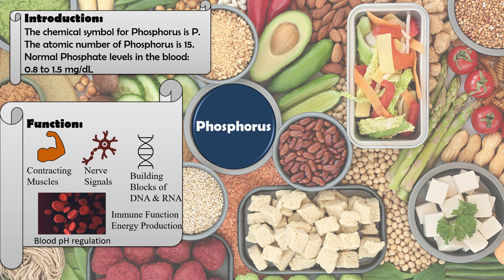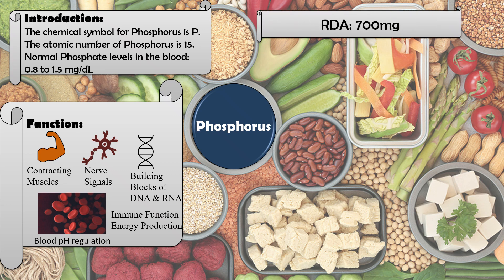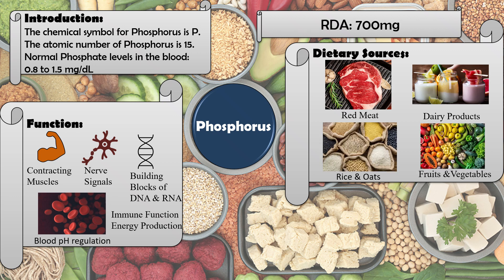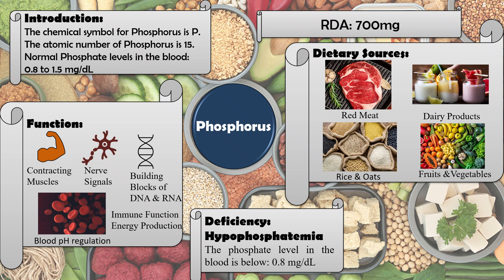Phosphorus is involved in energy production through metabolic processes, acting as a cofactor. The RDA for phosphorus is 700 mg. Dietary sources include red meat, rice, oats, fruits, and vegetables. Deficiency of phosphorus is known as hypophosphatemia, occurring when phosphate levels fall below 0.8 mg/dL.